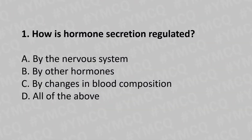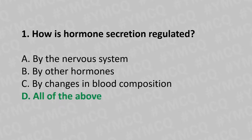How is hormone secretion regulated? Option A: by the nervous system. Option B: by other hormones. Option C: by changes in the blood composition. Option D: all of the above. And the answer is Option D: all of the above.